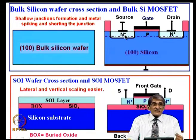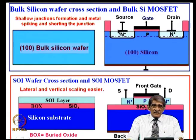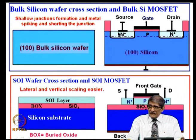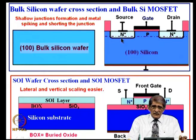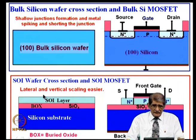You need to keep junction depth very shallow. When the junction is very shallow, you encounter other problems — for example, aluminum metal can spike through the junction and short to the p-type substrate. Today, silicides are used to reduce that problem drastically. The main challenge is controlling lateral diffusion and keeping junction depth shallow. Instead of using a conventional bulk MOSFET, you go to an SOI wafer: silicon at the bottom, then silicon dioxide (the buried oxide), then a thin silicon layer on top.